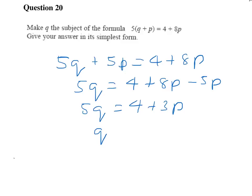And then finally Q, making Q the subject, will equal 4 plus 3P, all divided by 5. So here the 5 was a multiplier and it moves across to the other side as a divider. So making Q the subject, we have Q equals 4 plus 3P over 5.